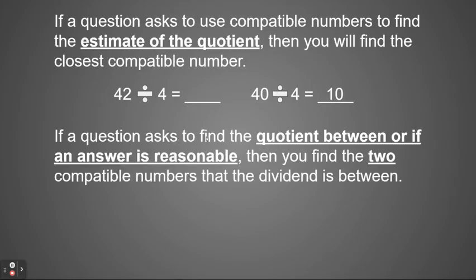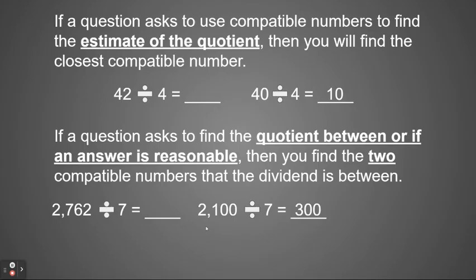If a question asks to find the quotient between, or if the answer is reasonable, then you're going to find the two compatible numbers that the dividend is between. So again, if we had 2,762 divided by 7, I'm going to find two numbers that are multiples of 7 that are closest to 27. So I know that 21 is a multiple of 7. So 2,100 divided by 7 would be one quotient that I would need to find. And I know that 28 is another multiple of 7. So 2,800 divided by 7 would be my next quotient. So then my answer would be somewhere between 300 and 400.